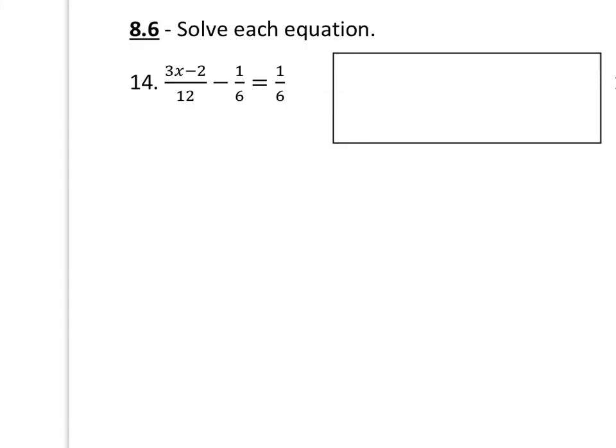So looking at this problem, the first thing we want to do is try to find the least common denominator. In this case we don't have to factor any of the denominators. The denominators we're looking at are 12, 6, and 6. Now again, the key with finding least common denominators is that the least common denominator is really the lowest or least common multiple of the denominators.